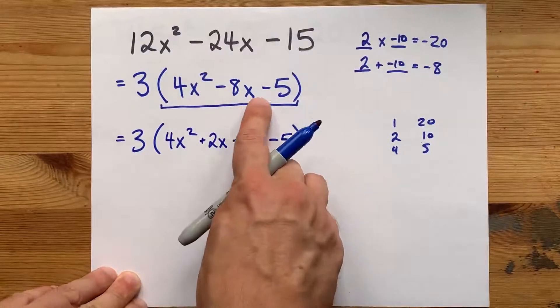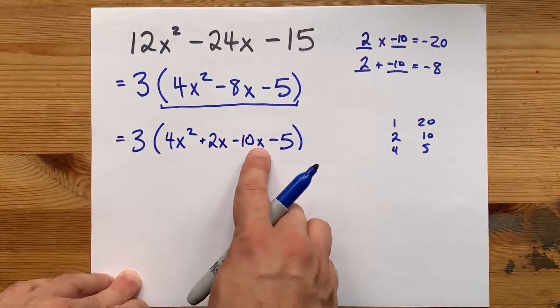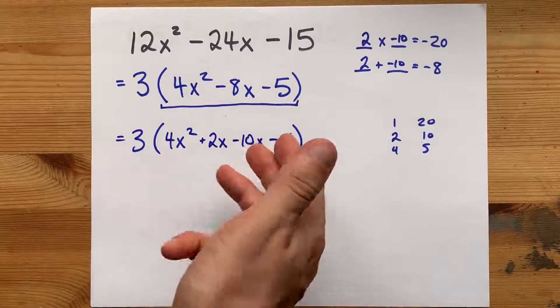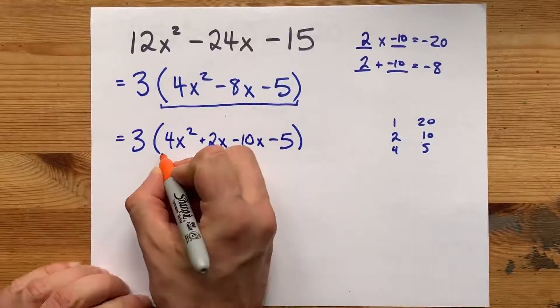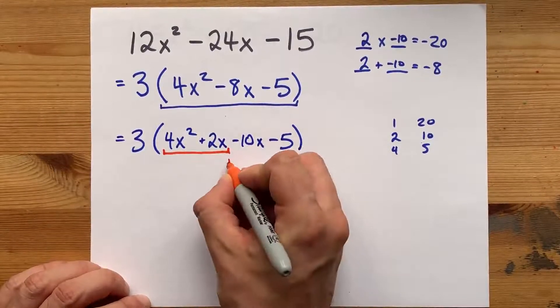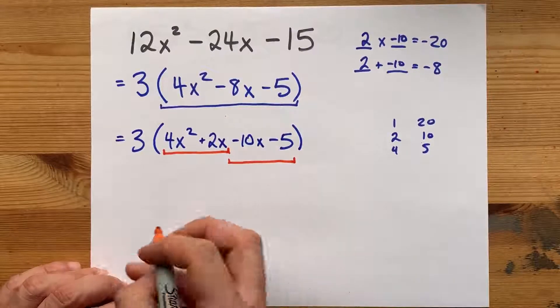If there happen to be other letters on here, just carry them down. This term and that term both get those same letters. And then, we're going to factor this pair by common factoring and separately, common factor that pair.